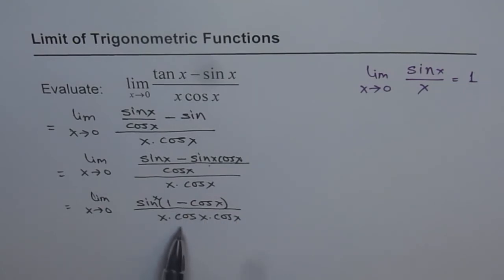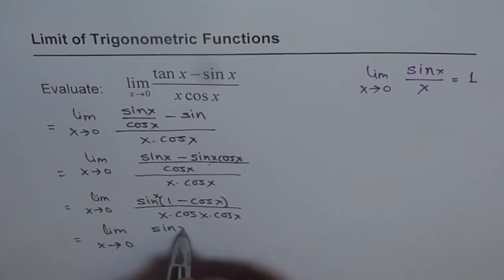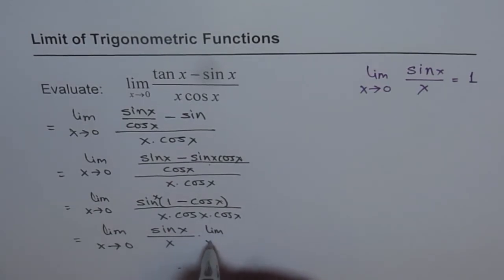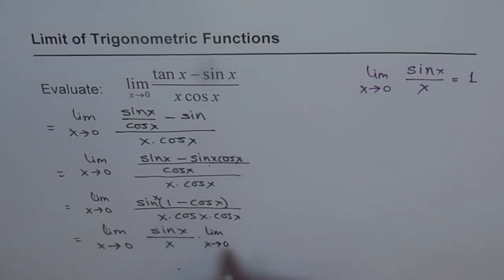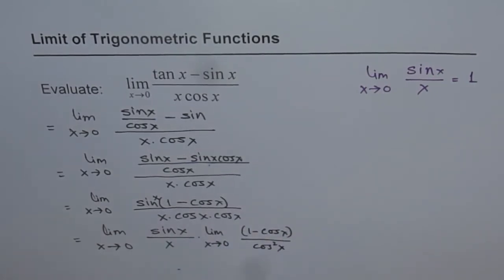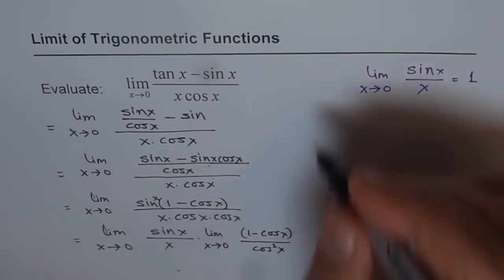As you can see, we have isolated sine x over x by doing all this. So that is the kind of strategy we were really working on. So what we finally get is, limit x approaches 0, and we can split this now. We have sine x over x times limit x approaches 0 for 1 minus cos x over cos square x. I hope you appreciate that part. So that is the basic strategy and once you come to this stage, you know you're very close to the solution.